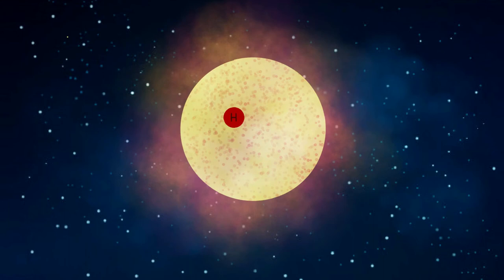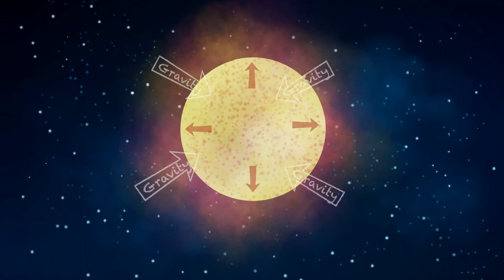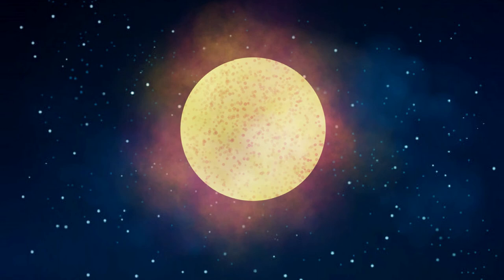The force of gravity then overpowers the outward pressure, causing the star to collapse. The outer layer of the star, which is mostly hydrogen, starts to expand.